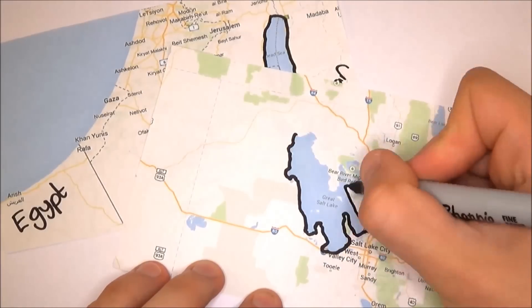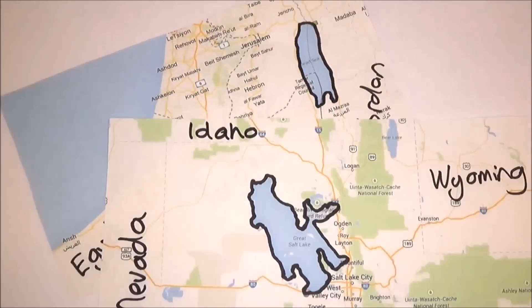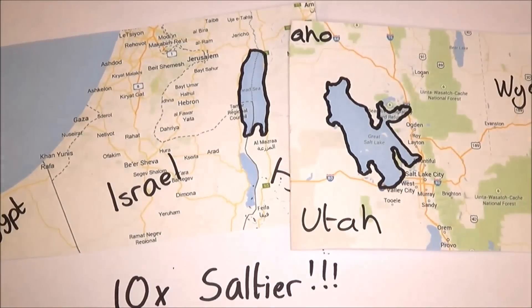So I included lakes before with oceans because some lakes are really, really salty. Mainly the Dead Sea and the Great Salt Lakes. Both of which are 10 times saltier than seawater. This is because, unlike most lakes, they have no outlet rivers.